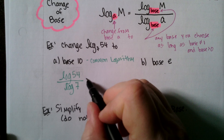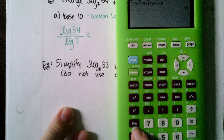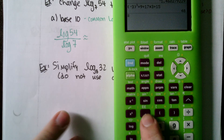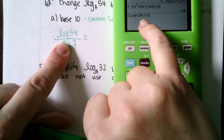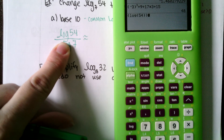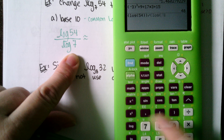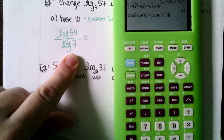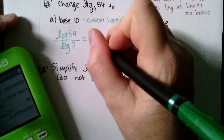If they ask for a decimal approximation, go to your calculator and use the log button. Enter log of 54 in parentheses in the numerator — your calculator may add extra parentheses, so make sure they're all closed. Then divide by log of 7 also in parentheses, close both sets, and press enter. That gives 2.0499, or whatever precision they ask you to round to.